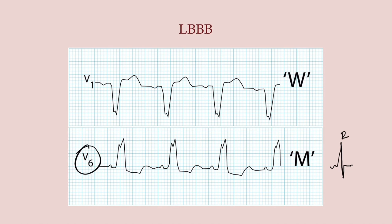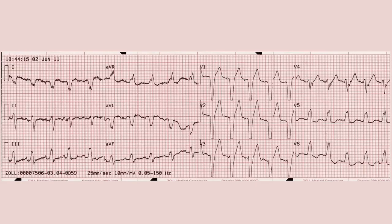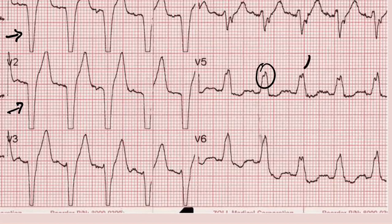Another finding in left bundle branch block is a dramatically deep S wave on V1, with barely any R wave visible — just a deep drop. This is classic for LBBB. To summarize: look for the deep S wave on V1 and V2, and the notched R wave in V5 and V6. You can see the notching more clearly on close-up — that is left bundle branch block.